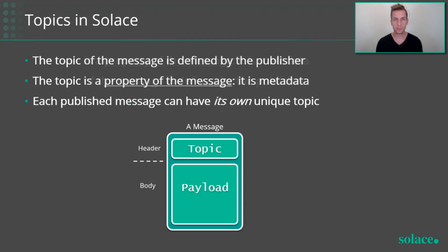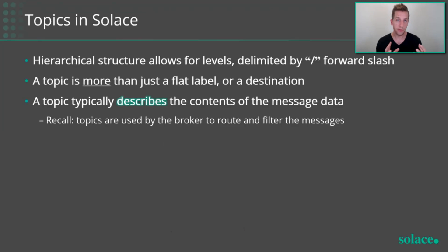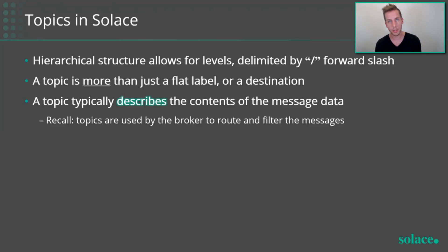How are things different in Solace? Topics in Solace are not configured on the broker per se — they are defined by the publishing application at publish time. Think of it as a property of the message or metadata, not like writing to a file. When I define a message in my code, I have a payload — which can be JSON, XML, a binary blob, or whatever you want — and I send it with a free text string that defines a topic I create right there. Each and every message could be going to a unique topic if you wanted. Solace supports a hierarchical topic structure that allows you to be very descriptive, so anything in your data or payload that you want to route or filter on belongs in your topic.